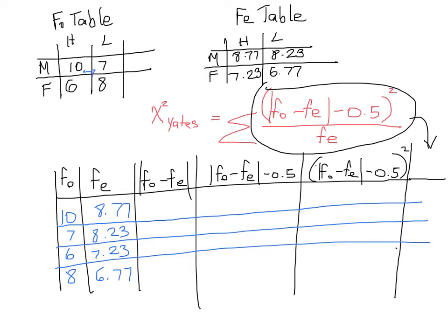So now let's fill in the first row together and then you can do the other rows on your own and we can see if our answers match. All right, so when you subtract 10 minus 8.77—so the first row—our absolute value of that answer is 1.23. You take 0.5 away from it in the next column and you get 0.73. You square that number as we should in the next column and we get 0.5329.